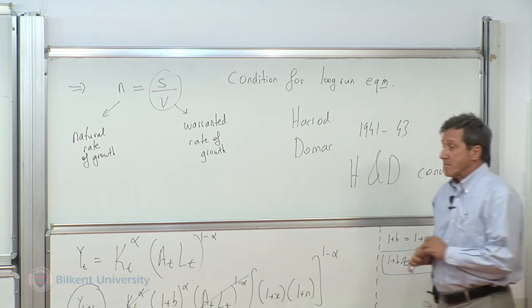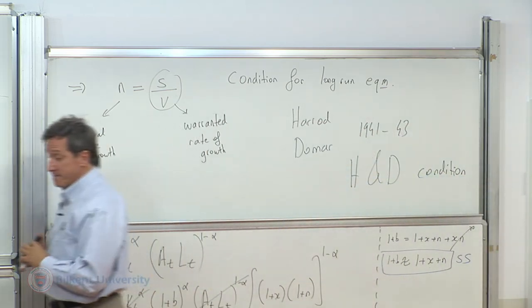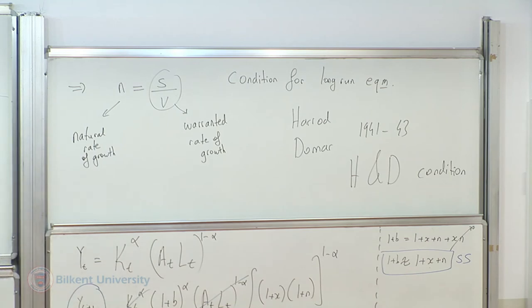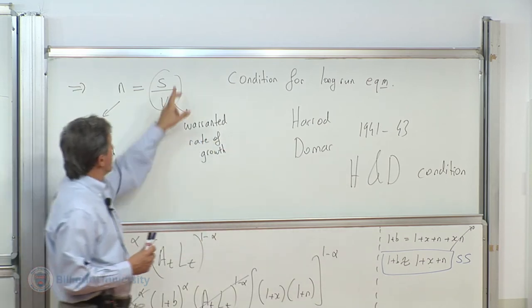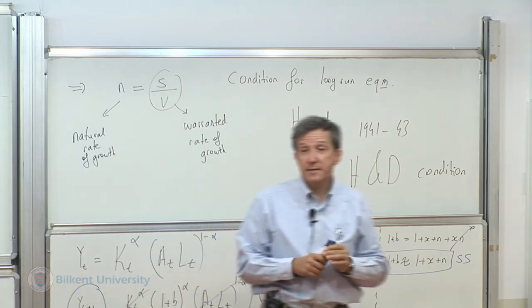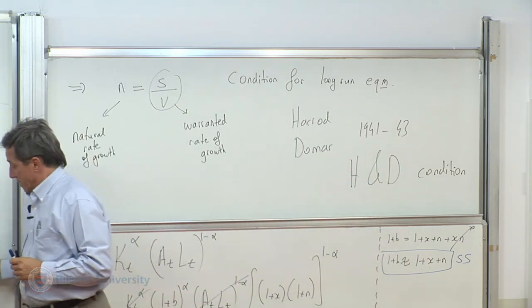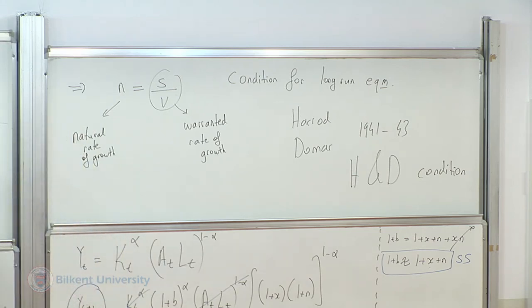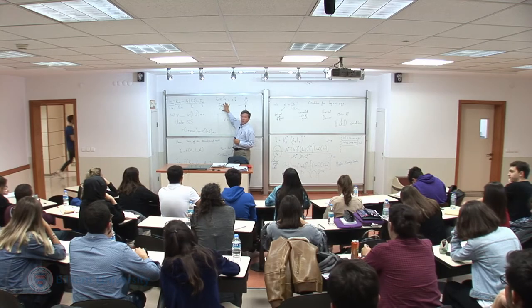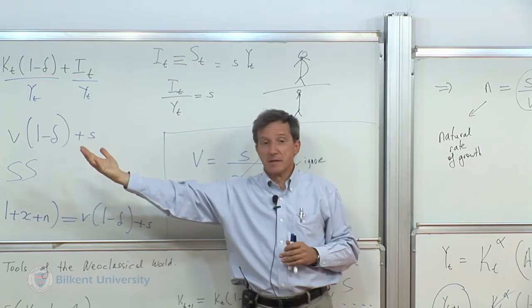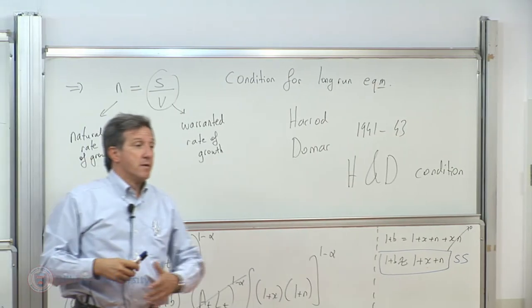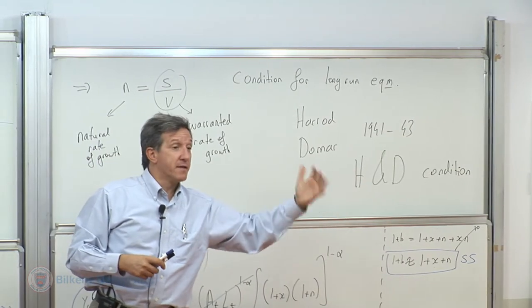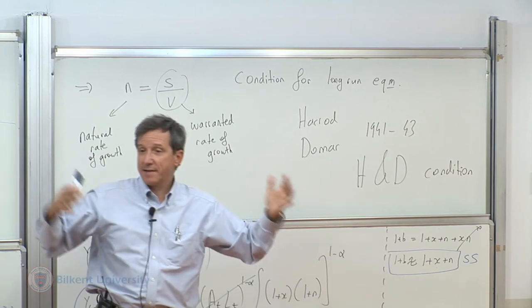Historically, their argument was that if you look at these parameters, N is exogenously given from the people's side. S is the investment share of output. It's another behavioral relationship. After all, Chinese save and invest a lot. Americans and Turks save and invest less. It is a given factor.